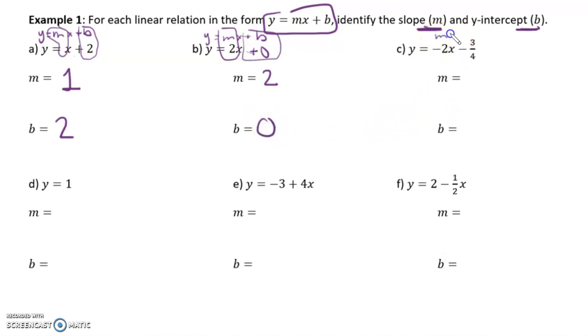Okay, so we'll have mx plus b, the m is negative 2, and the b is negative 3 over 4.